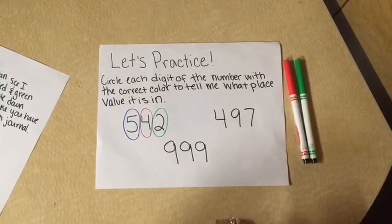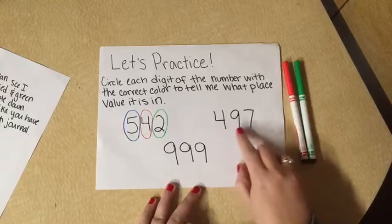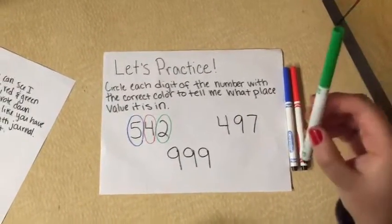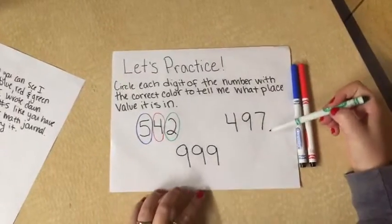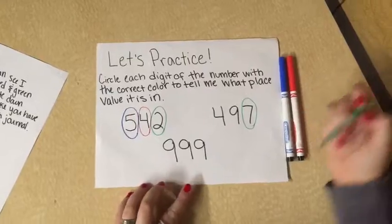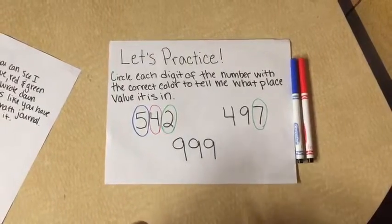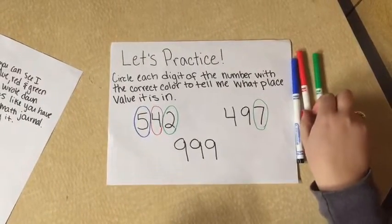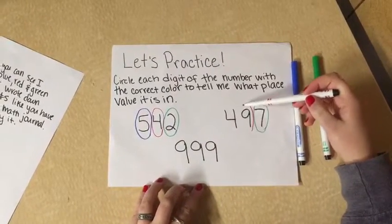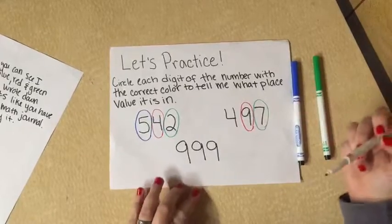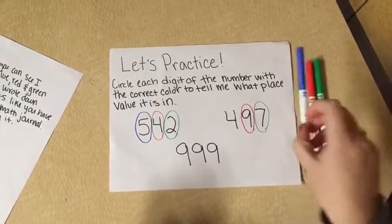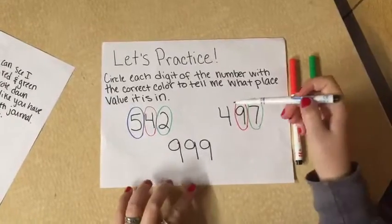Now let's move on to our second number. We have 497. So first we'll look at our ones place, so I pick up my green marker. Circle our 7. And then we'll look at our tens place, using my red marker, and I'll circle the 9. Now last but not least, we look at the hundreds place again, using my blue marker. I'll circle the 4.